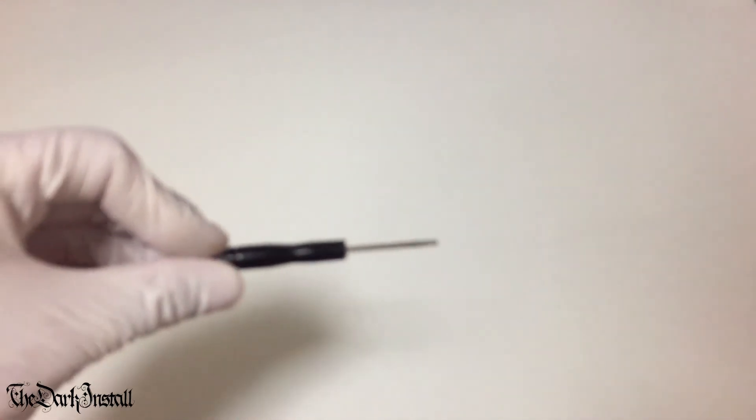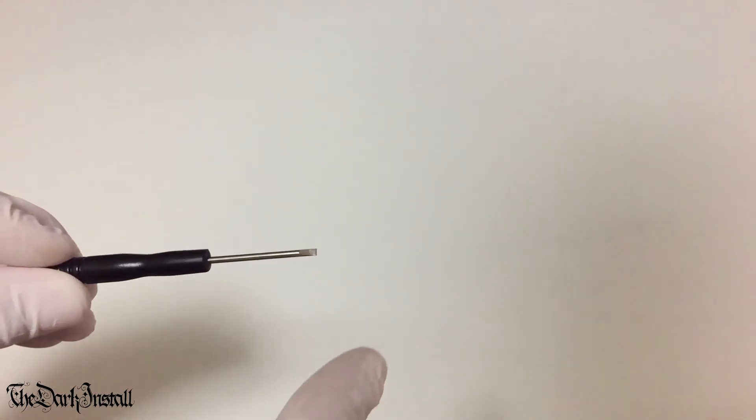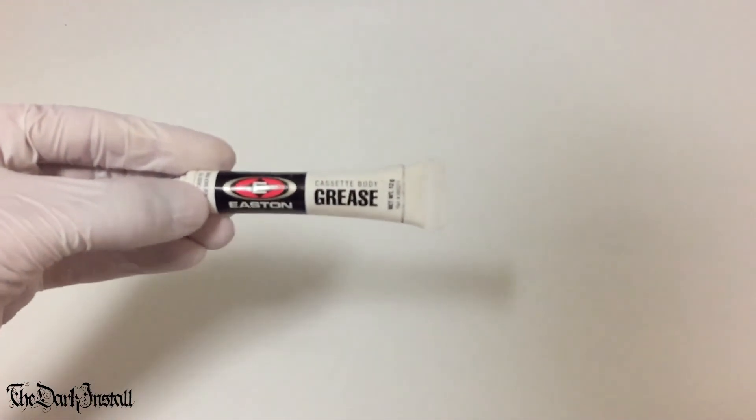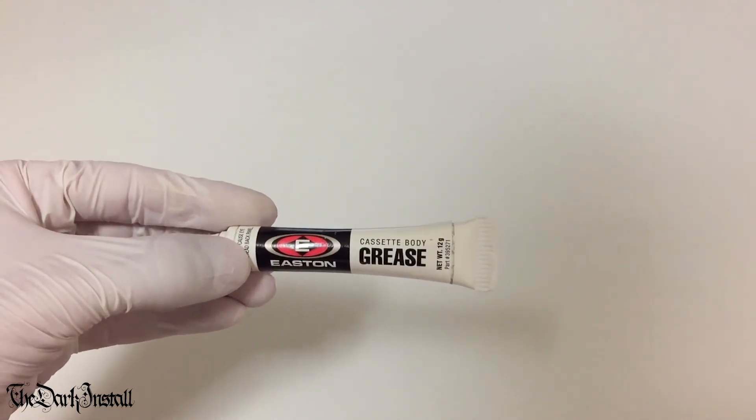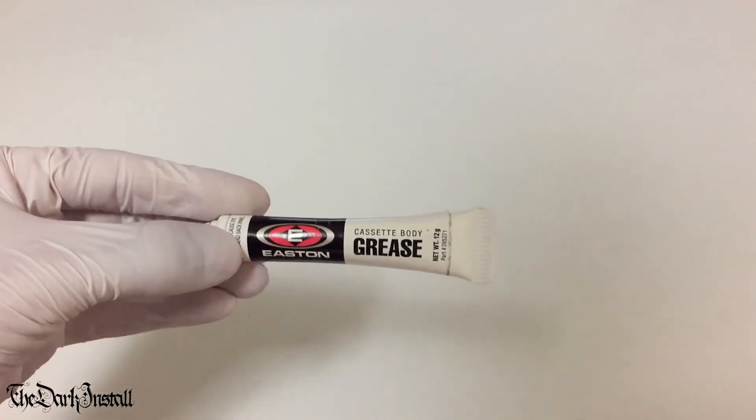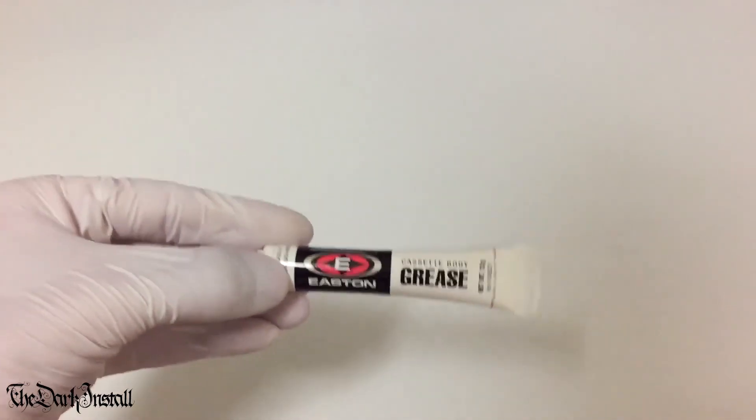First, you will need a very tiny flat blade screwdriver. You can see how small that is. Next, you will need some cassette body specific grease for when you lube it all back up again. Don't use thick assembly grease in place of this because you'll knacker your hub.